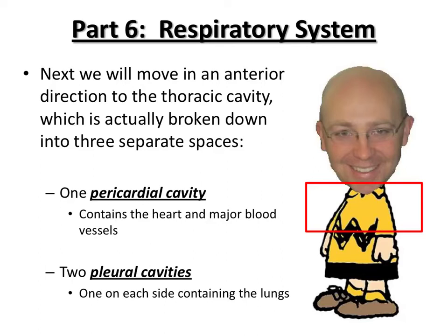So from the abdominal cavity that we just finished, we're going to move anteriorly — toward the head — to the thoracic cavity, the chest. The thoracic cavity is actually three different sections: a central pericardial cavity, which is the area that surrounds the heart and the major blood vessels, and then two pleural cavities, one on each side, and the pleural cavity contains your lungs.